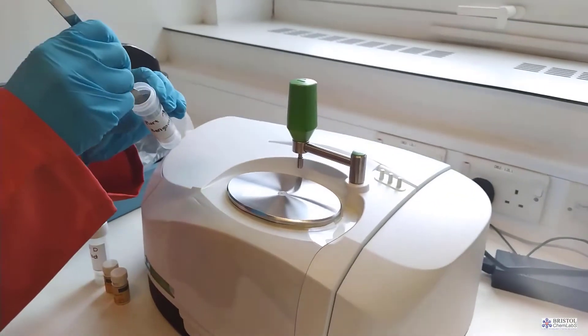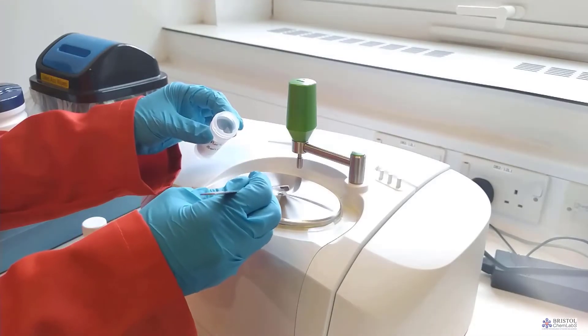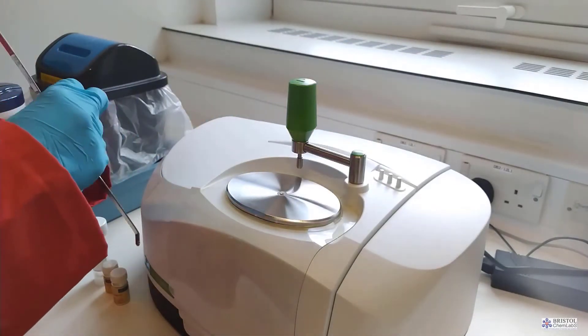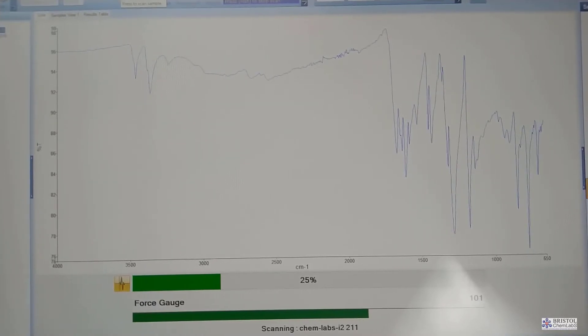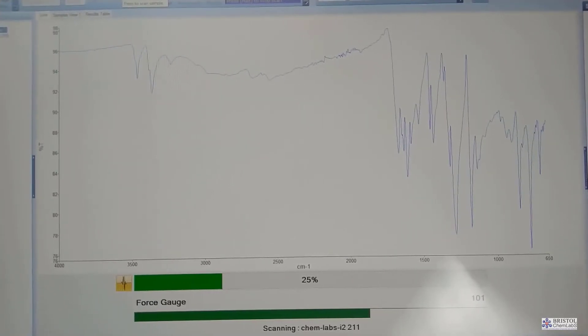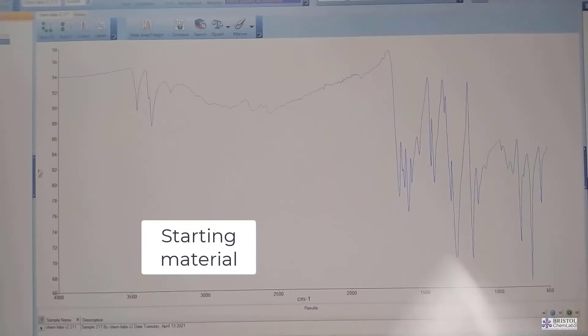To use an infrared spectrometer the first thing we need to do is to clean the diamond that is used as the window into the machine and we can use effectively a baby wet wipe for this. We can use propan-2-ol. We then let the diamond dry off which is very quick as propan-2-ol is very volatile. We also clean the mirror that is used to reflect the radiation back through the sample.